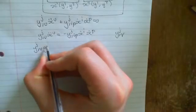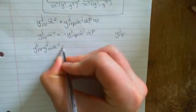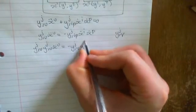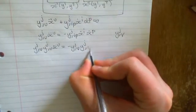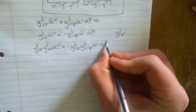So let's do that. y_j differentiated with respect to v, y_j differentiated with respect to u, x double dot u, equals negative y_j differentiated with respect to v, y_j differentiated with respect to ip, x dot i, x dot p.